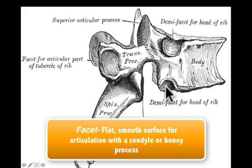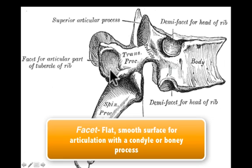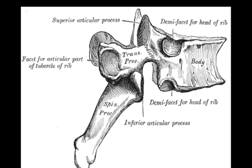These are areas — the facet here, facet here — this superior articular process or facet is the surface, and this facet here is for articulation with the tubercle of a rib. These are all flat smooth surfaces for articulations with a condyle of another bone.